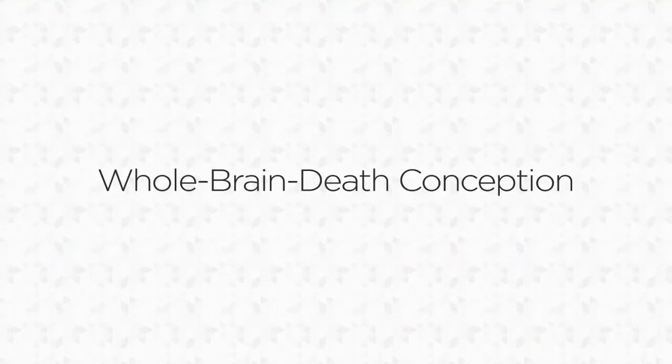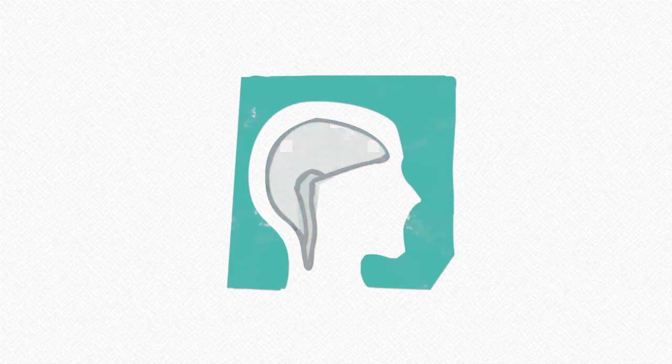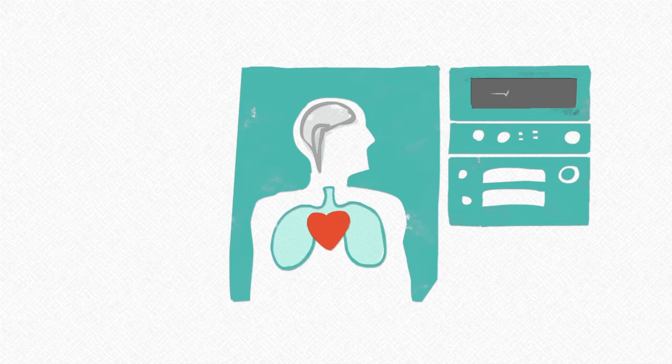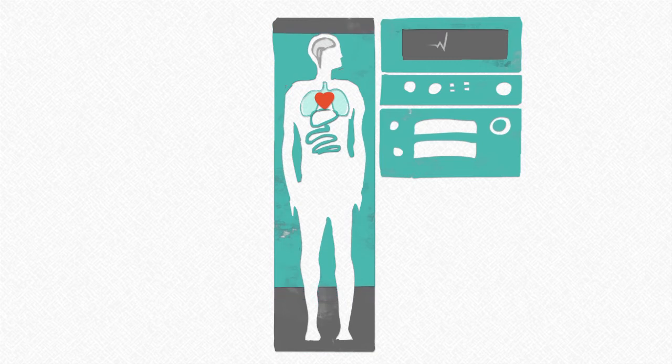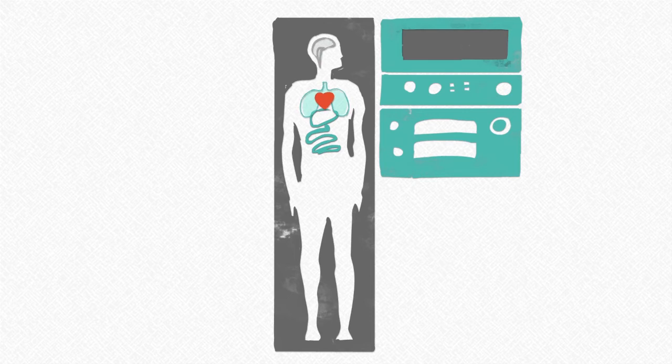Now, according to what has come to be known as the whole brain death criterion for establishing death, a human being is dead once the whole of the brain has ceased to function, even if heartbeat and breathing can be artificially maintained. The brain, it is claimed, is the chief integrating organ. Thus, when the brain is no longer able to function, the entity that remains is no longer capable of achieving sufficient integration or organization to constitute a genuine human organism.